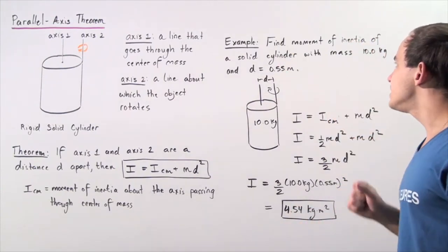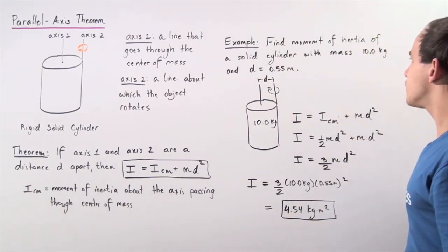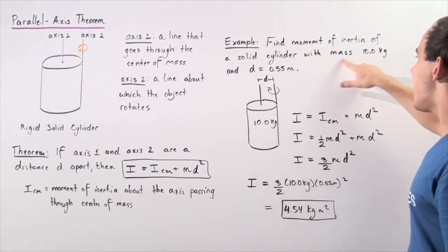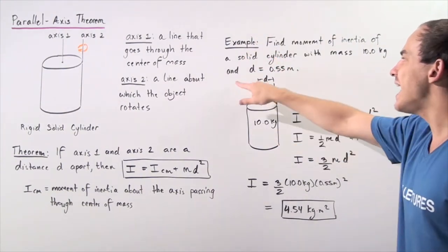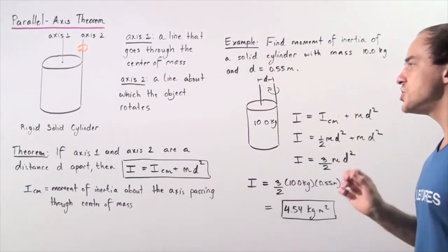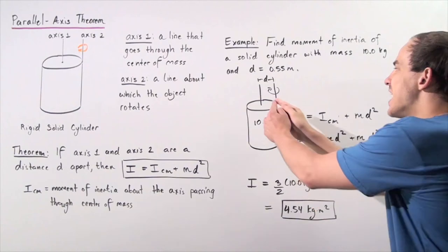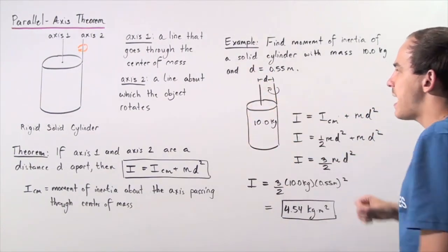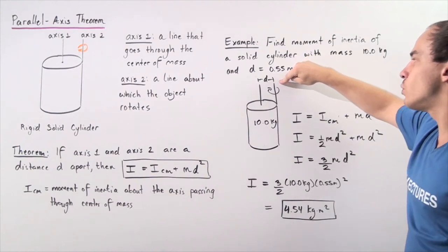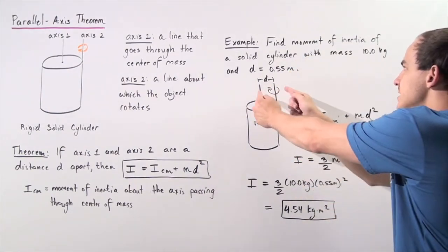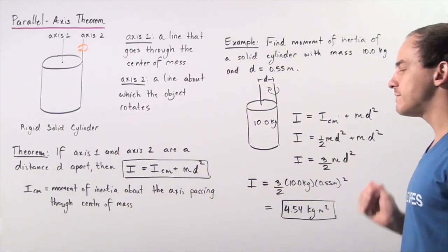We want to find the moment of inertia of a solid cylinder as shown with a mass of 10 kilograms and a distance of 0.55 meters separating our axis that passes through our center of mass and the axis about which our object rotates, axis number two.